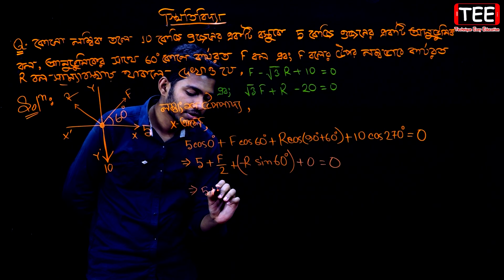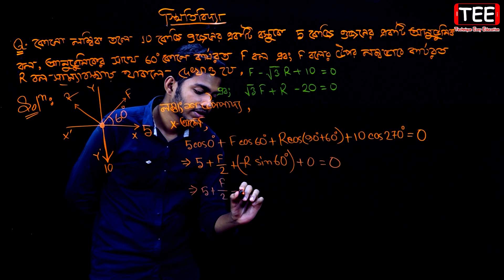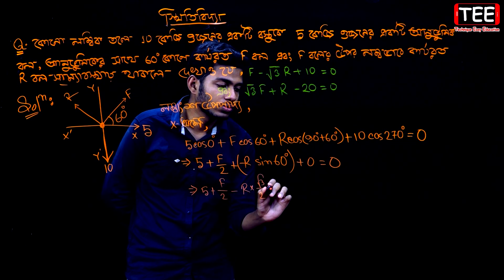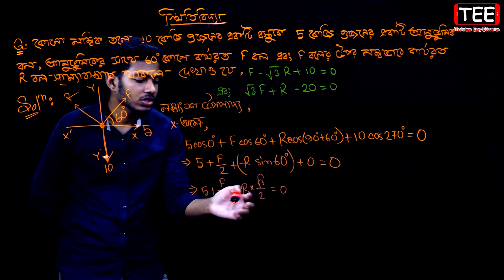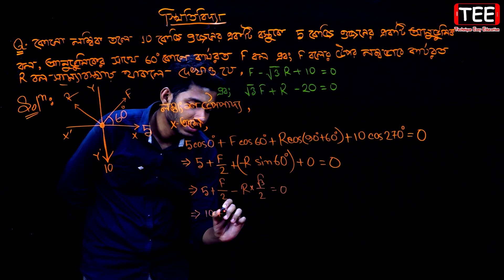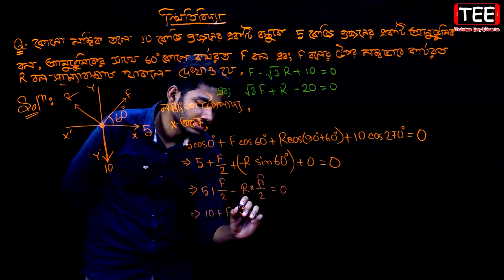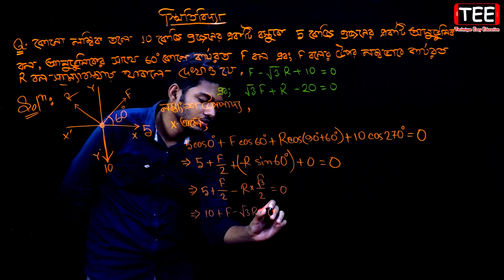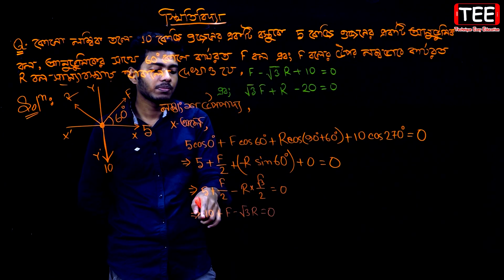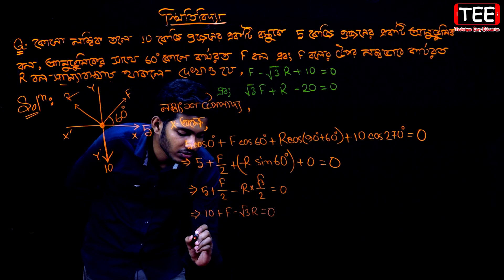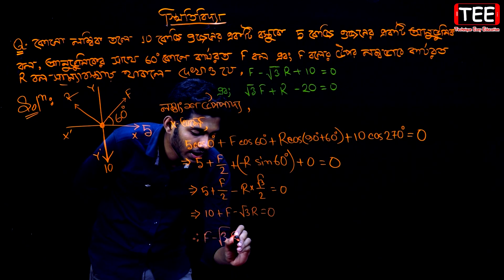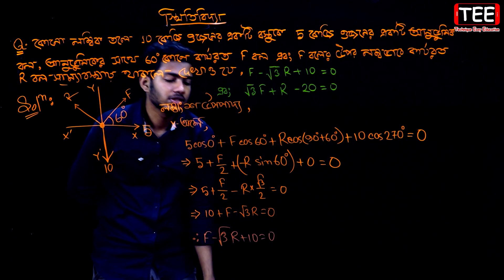So, 5 plus F divided by 2 minus r into sin 60. Sin 60 is root 3 divided by 2, equal to 0. So, if we use: 10 plus F minus root 3 into r is equal to 0. Therefore, F minus root 3 into r plus 10 is equal to 0.